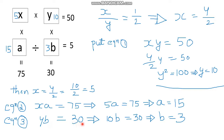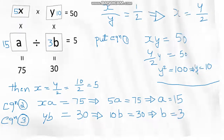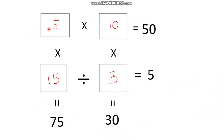From equation number 3, Y times B is equal to 30. The value of Y is 10, so 10 times B equals 30. On simplification, B is equal to 3.